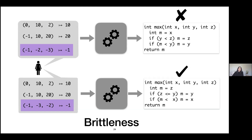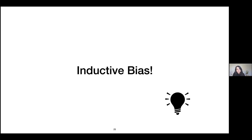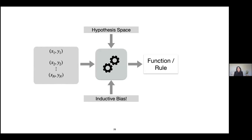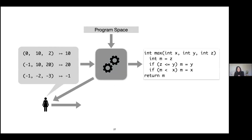Since we have inherited these problems from inductive learning, it makes sense to learn from the solutions inductive learning uses to combat them. Inductive learning uses inductive bias — a set of assumptions made by a learning algorithm to perform induction, generalizing from a finite set of observations to a general rule or function over the entire domain. A common inductive bias is Occam's razor, which assumes the simplest hypothesis consistent with the examples is typically the best.